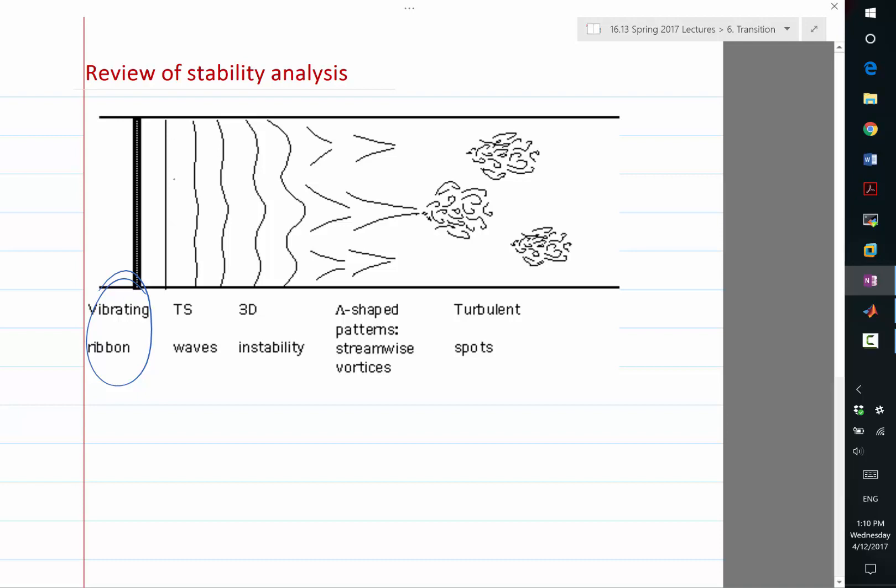That is going to increase in magnitude as it travels downstream. And when it travels downstream and increases in magnitude, the TS wave is going to stay as two-dimensional perturbations.